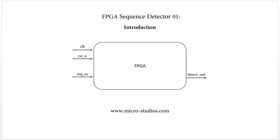It has one sequence data in and another one detected out. For the sequence data in, we will have a bunch of bit data stream coming from this pin. For this bit data stream, it includes some special data like this.